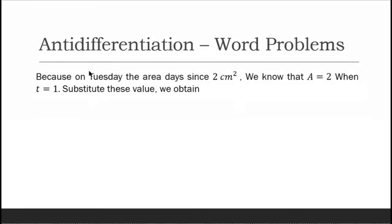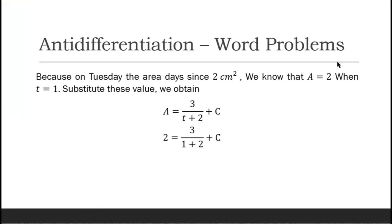Based on the given information, on Tuesday the area is 2 square centimeters. Since Tuesday is 1 day since Monday, we know A = 2 when t = 1. Substituting: 2 = 3/(1 + 2) + c, so 2 = 3/3 + c, giving us 2 = 1 + c, therefore c = 1.